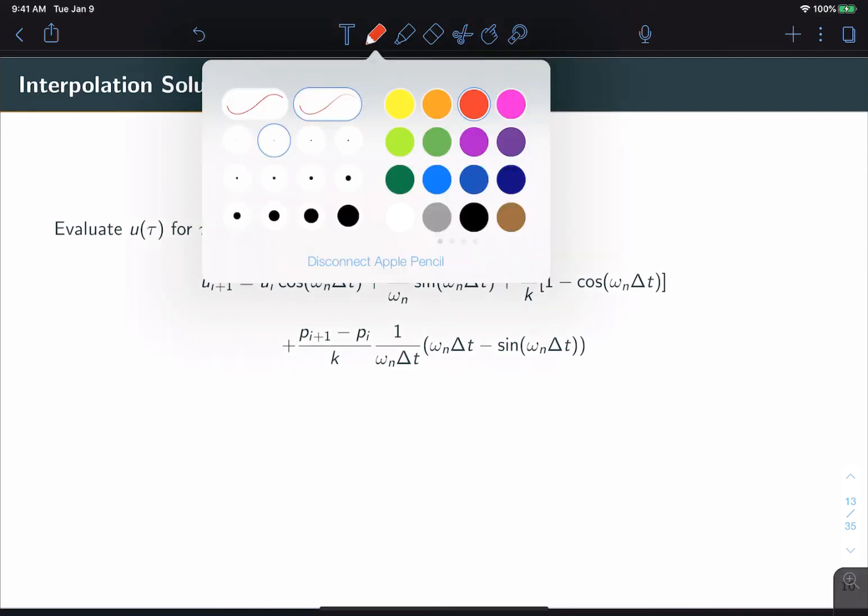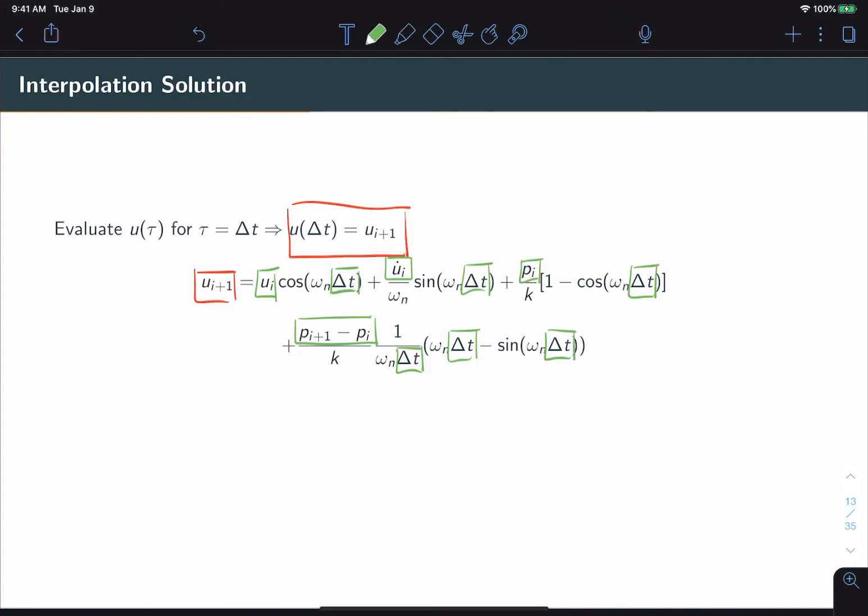Let's look at what is known and what is unknown. Everything marked in green is known. We know all the u's that have subscript i because that's our current time step. In addition we know all the forces and of course we know our time interval Δt. The only thing that we don't know is ui+1, and conveniently the equation is set up in a way where we can solve for it directly.